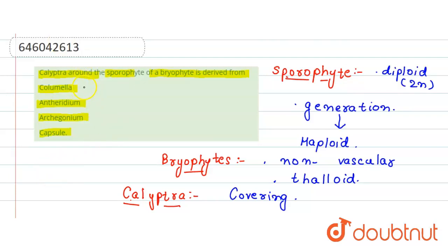The first option, columella, is wrong because columella is just a stalk-like structure. The second option, antheridium, is also wrong because antheridium is a male structure, so it cannot give rise to calyptra.